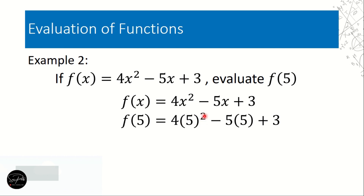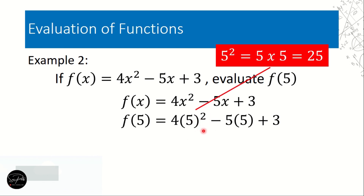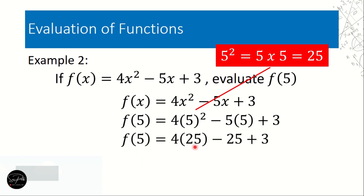Recalling the order of operation: PE — Parenthesis and Exponent; MD — Multiplication and Division; AS — Addition and Subtraction. So evaluate 5 to the second power first: 5² = 5 times 5 = 25. Then f(5) = 4 times 25 minus 5 times 5 plus 3.